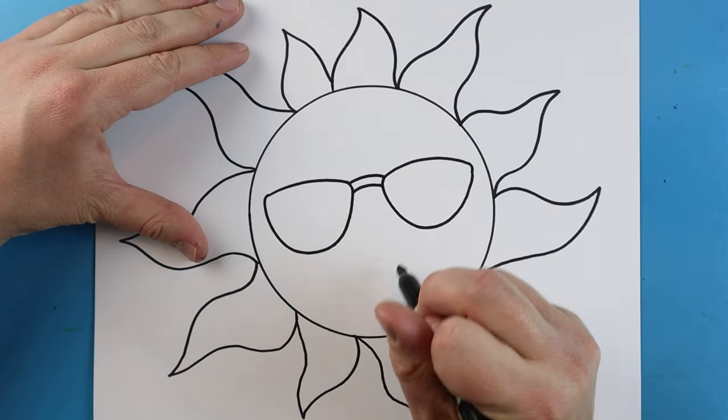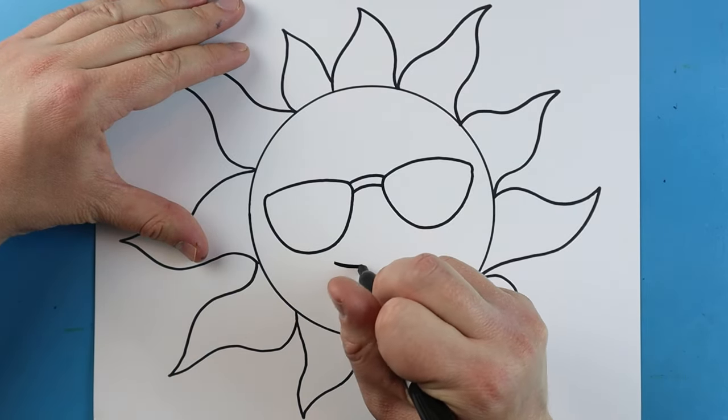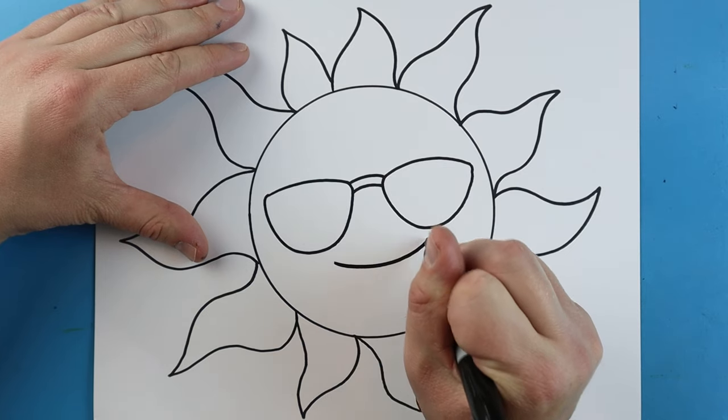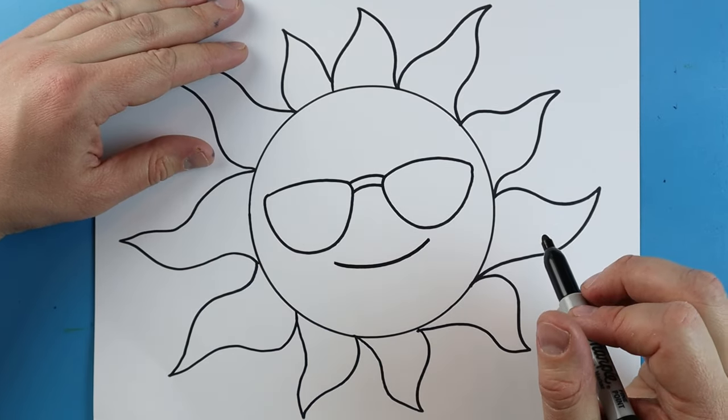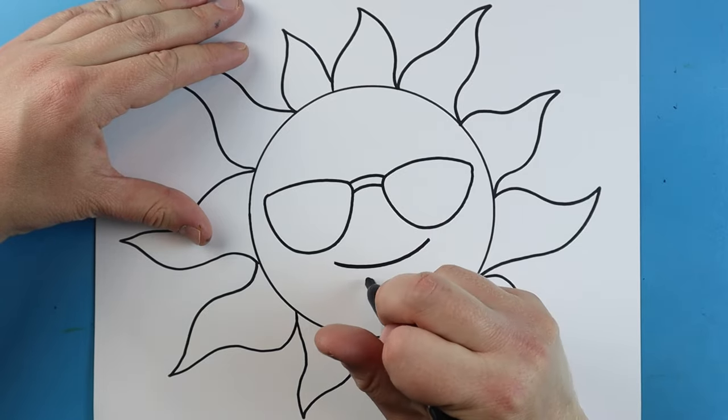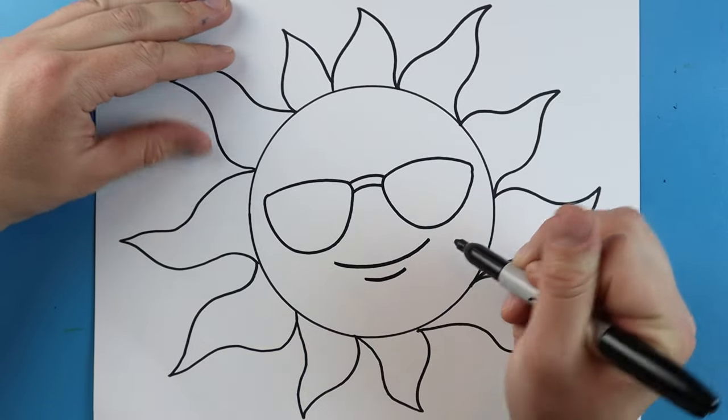Now starting right across here, I'm just going to make a little smiley face for my sun. So I'm just going to draw a little line right across here. And then I'm just going to draw another little line right underneath here.